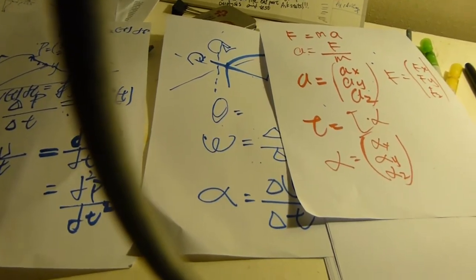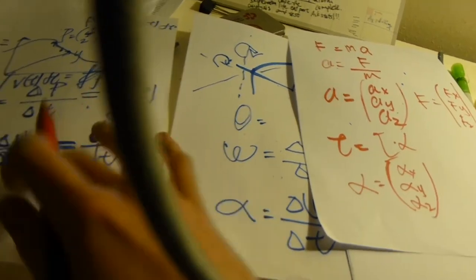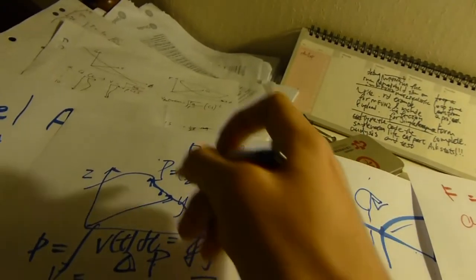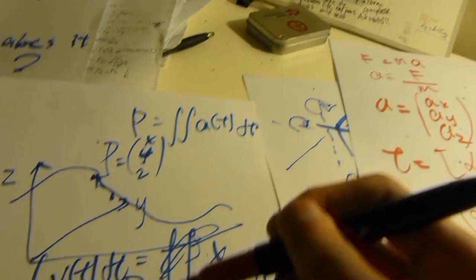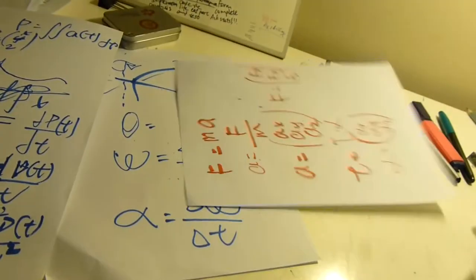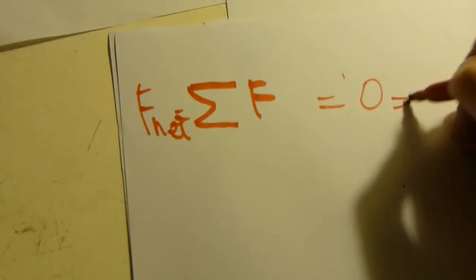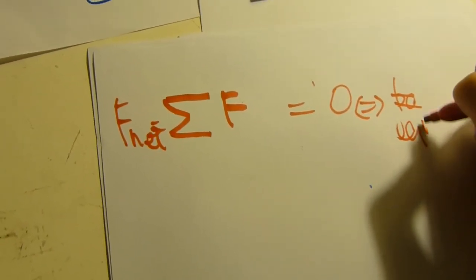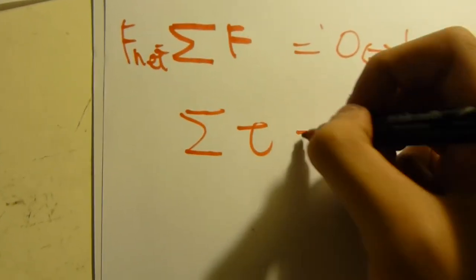In 3D space, a is actually a vector, and so is F. Also, for the rotation motion, you get T equals I times alpha. For something to balance, you can have F-net as the sum of F, and if that equals zero, then it's balanced, it's in equilibrium. And for the torque, it also applies.